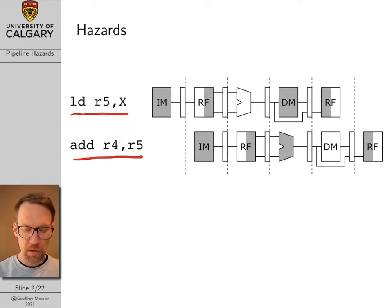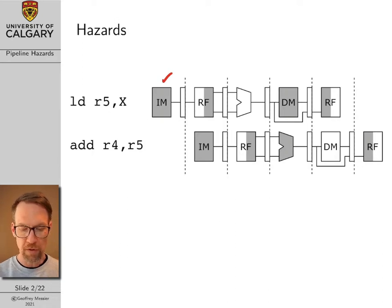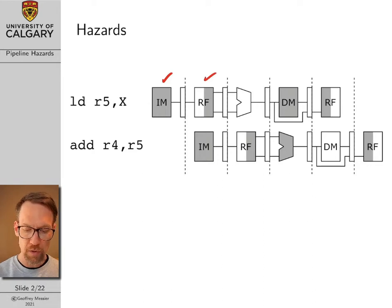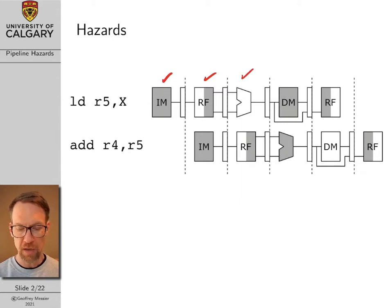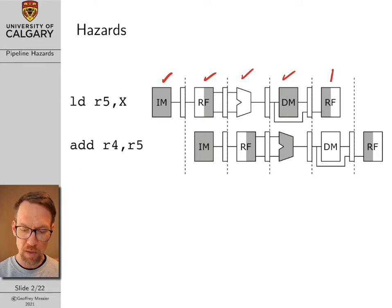If we take a look at our pipeline timeline diagram from the perspective of the load command, we fetch the load command from instruction memory, we read registers, our ALU doesn't do anything but we have a little time slot allocated for it anyways, and we read the value pointed at by the X register pair from memory.